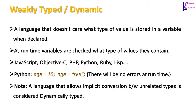A weakly typed or dynamically typed language doesn't care what type of value is stored in a variable when declared. In these languages, variables are checked at runtime for what type of values they contain. JavaScript, Objective-C, PHP, Python, Ruby, and Lisp fall into the category of weakly typed or dynamically typed languages.